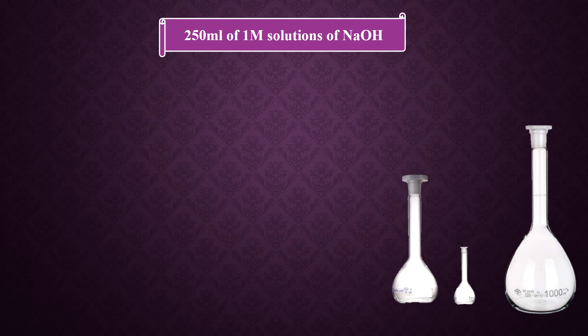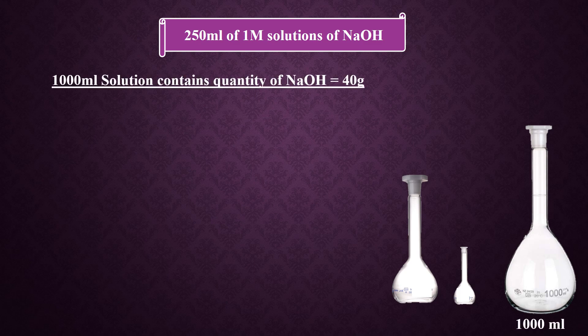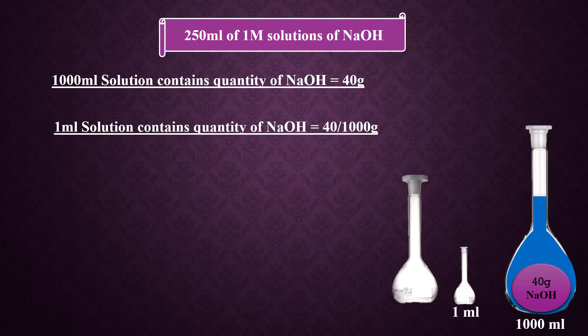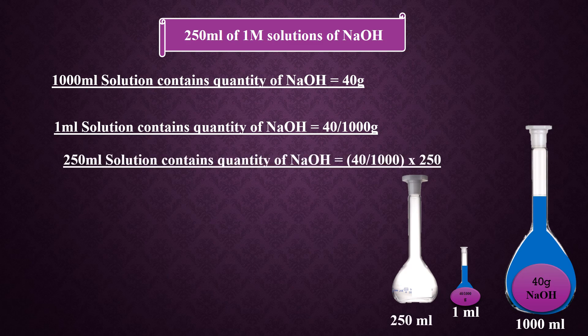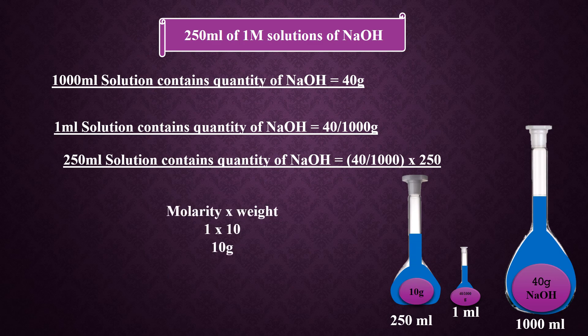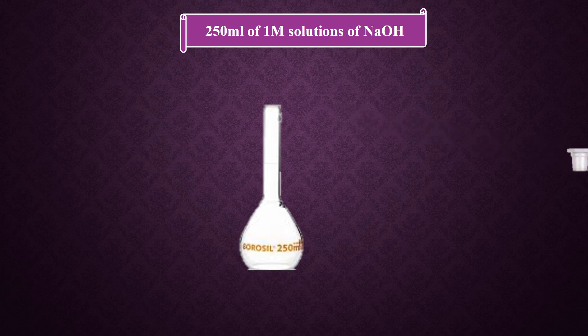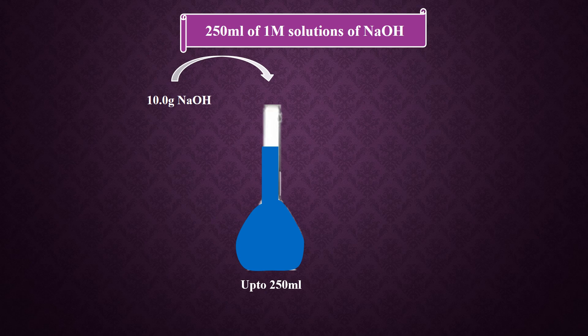Similarly, to prepare 250 milliliters of 1 molar solution of sodium hydroxide, follow the same 4 steps. 1000 milliliters contains 40 grams of sodium hydroxide (its molar mass). 1 milliliter contains 40 divided by 1000 grams. 250 milliliters contains 40 divided by 1000 multiplied by 250, giving 10 grams. Multiply by molarity 1 to get 10 grams. Dissolve 10 grams in a little water and dilute up to 250 milliliters. This will be a 1 molar solution of sodium hydroxide in 250 milliliters.